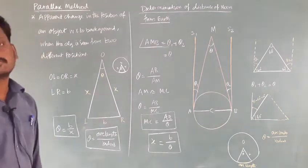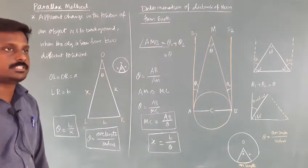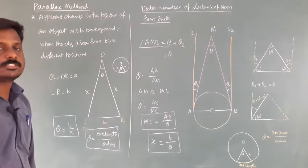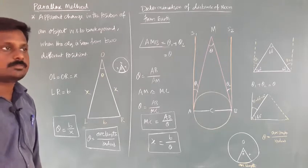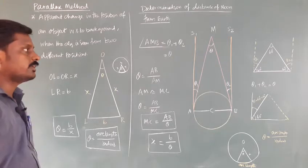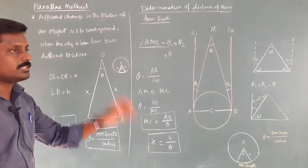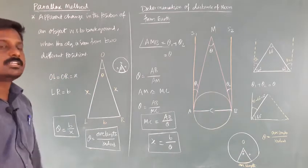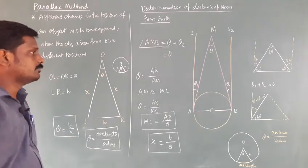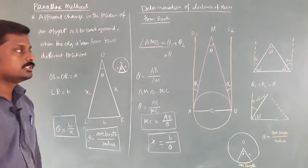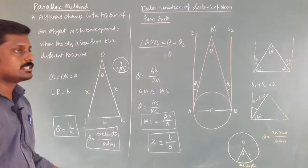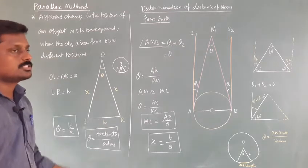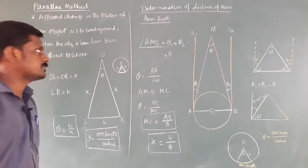Good morning students. In this class we are going to discuss about the parallax method. It is a method used to find the distance of distant objects — for example, the distance between the Earth and Moon, the distance between the Sun and Earth, and other stars and heavenly bodies.